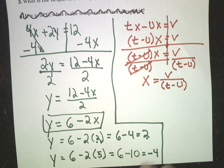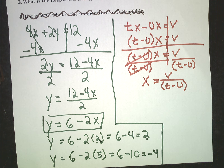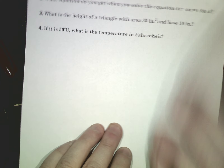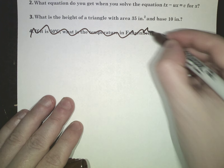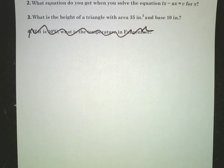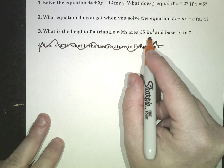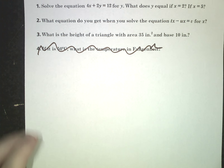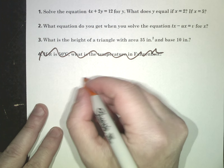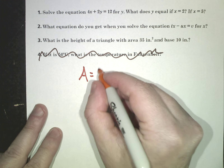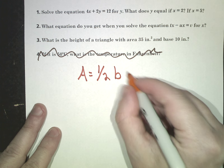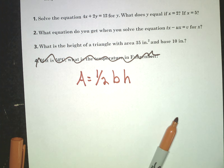Now I'm going to go to the third question, which is going to deal with our exit ticket — so pay attention to this one. I've got a new piece of paper. What is the height of a triangle with an area of 35 inches squared and a base of 10 inches? You have to know something first — you have to know the area of a triangle. Area of a triangle equals one half base times height.